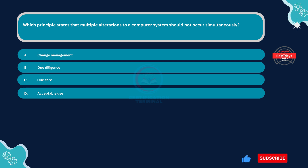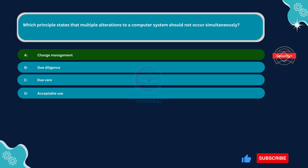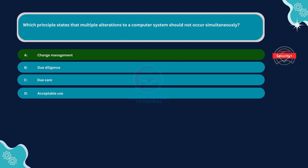The correct answer is Option A: Change management. Change management is the process of controlling changes to a computer system, including planning, scheduling, and implementing changes in a controlled manner. One of the fundamental principles of change management is that multiple alterations to a computer system should not occur simultaneously. This principle helps minimize risks associated with system changes and ensures that changes are properly tested and evaluated before deployment.